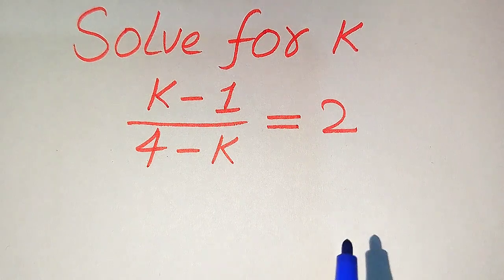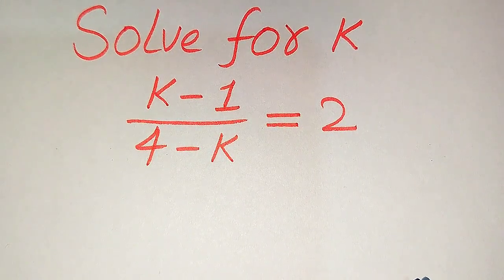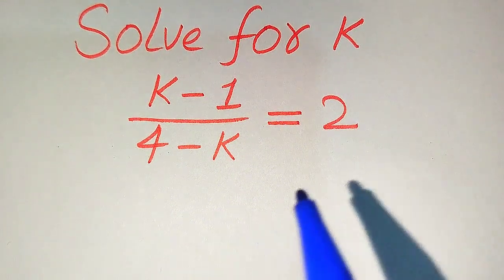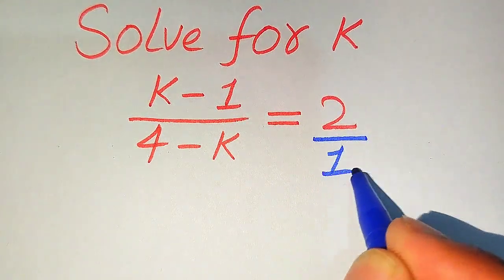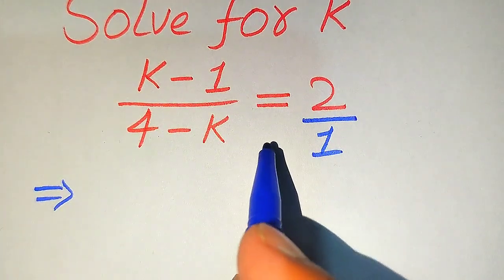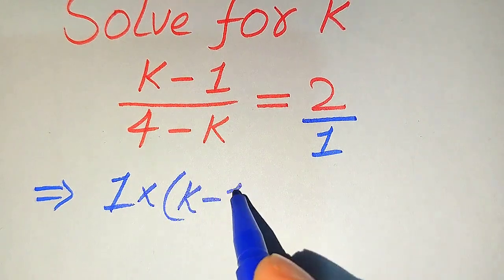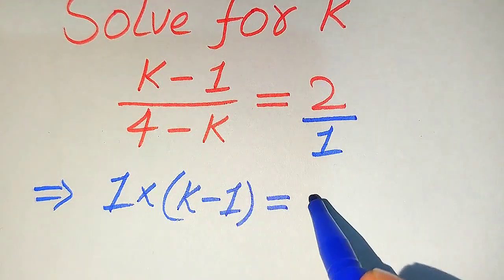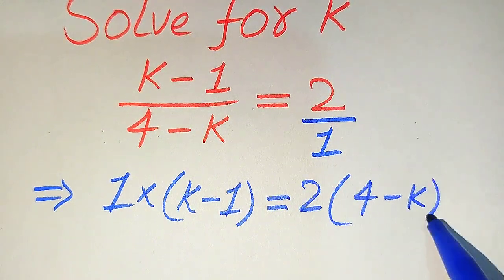If you have any other method in mind, please don't hesitate to write it in the comment section. Now we move towards the solution. First, focus on the right-hand side — the denominator of that term is 1. We need to cross-multiply the terms, so 1 is multiplied by (k-1) equals (4-k) multiplied into 2, giving us 2 times (4-k).